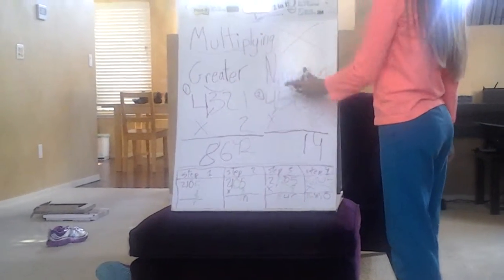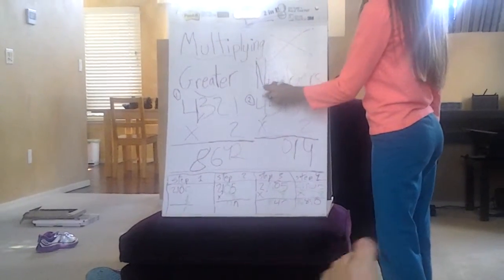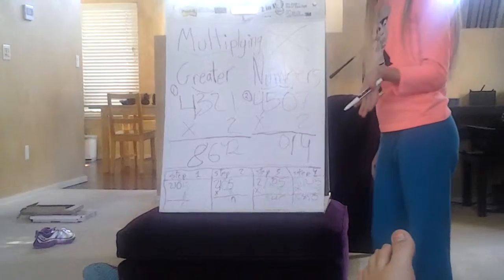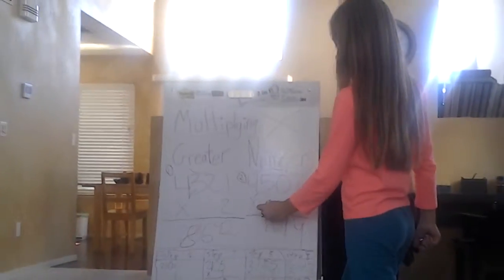And then you have 5 times 2, which is 10. Again, you put the 0 there, and the 1 above the 4, and 4 times 2, which is 8. And then plus 1 equals 9.